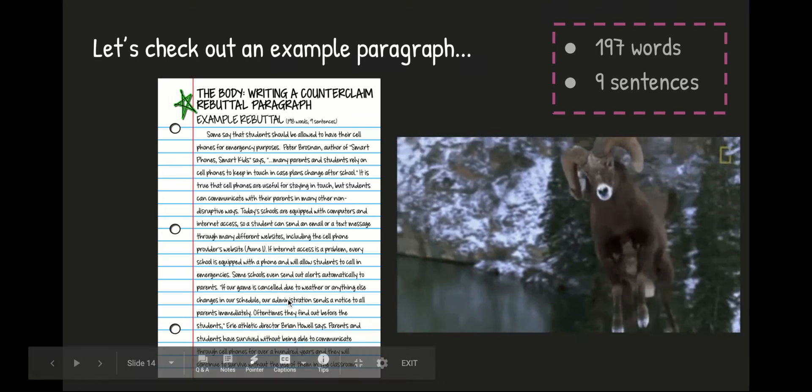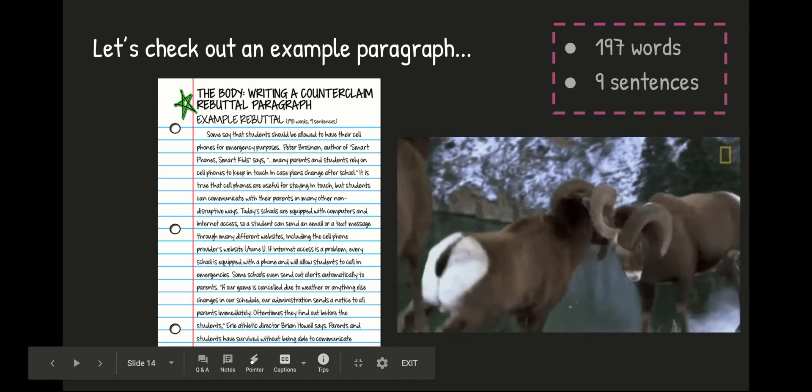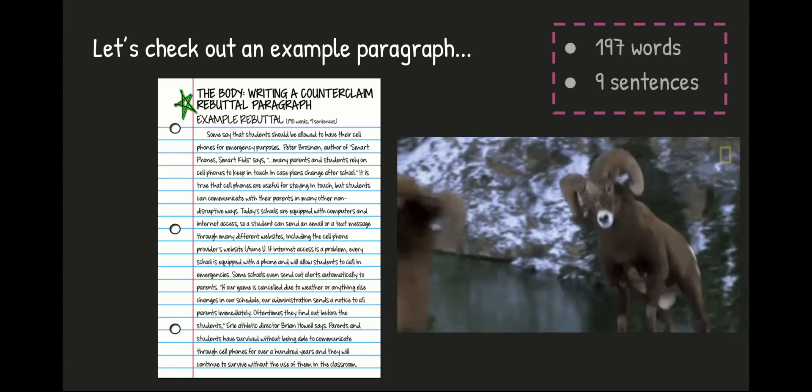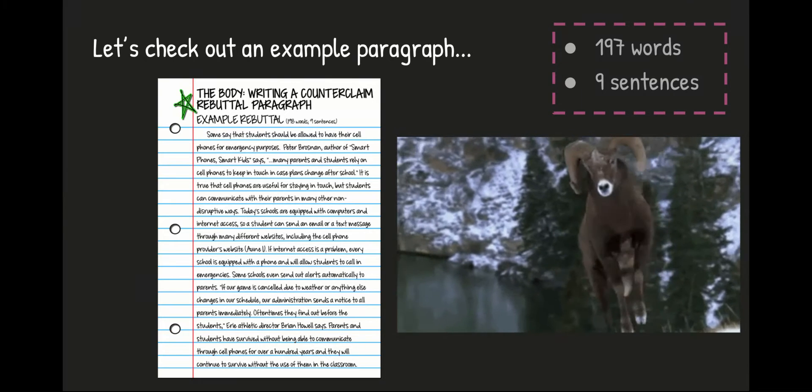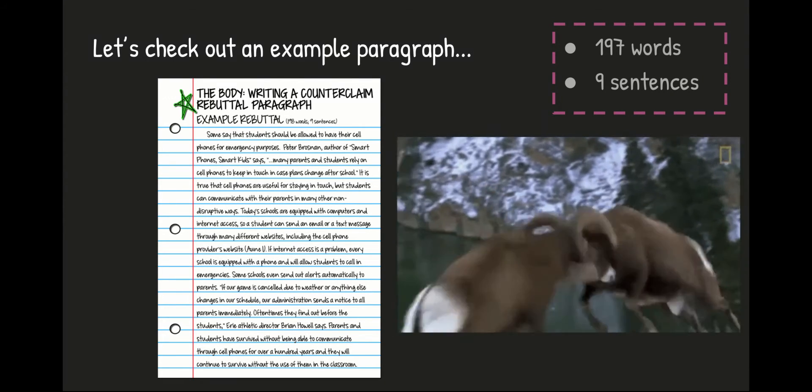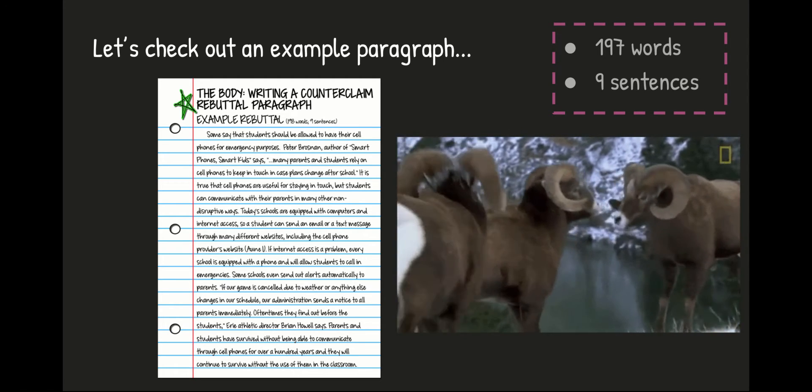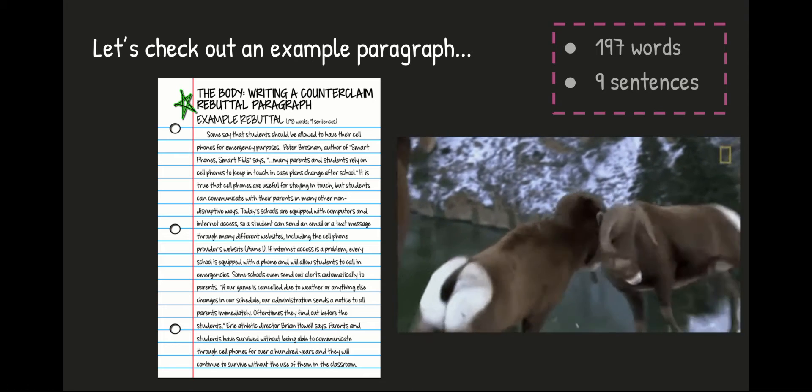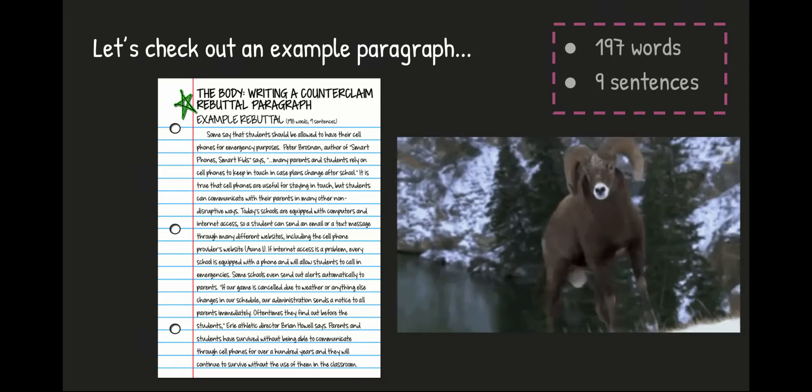From here, we have logical thinking. If internet access is a problem, every school is equipped with a phone and will allow students to call in emergencies. Duh. We do the same thing here. That's something that everybody knows. Some schools even send out alerts automatically to parents. Again, logical thinking. Duh. That's something that everyone is aware of. You need to have that in your counterclaim and rebuttal paragraph.